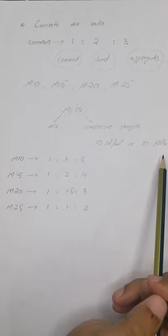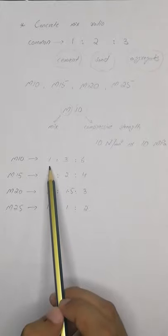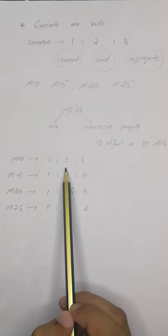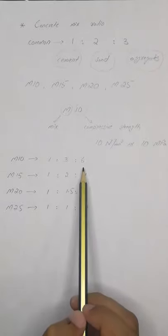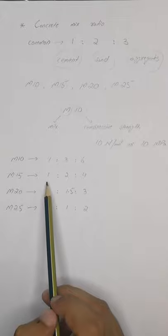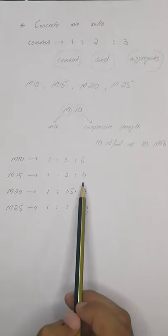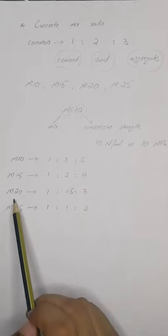To make M10 concrete, we will mix one bag of cement, three bags of sand, and six bags of aggregates. For M15, one bag of cement, two bags of sand, four bags of aggregates.